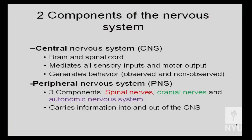The central nervous system is made up of the brain and the spinal cord. The function of these areas is to mediate all sensory inputs and all motor output. It generates behavior, both observed and non-observed. The brain is important for all our thoughts, all our plans, all our thinking.